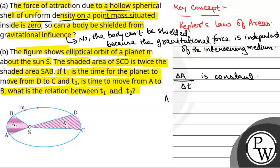So now we are given that the area of SCD is equal to twice the area of SAB.